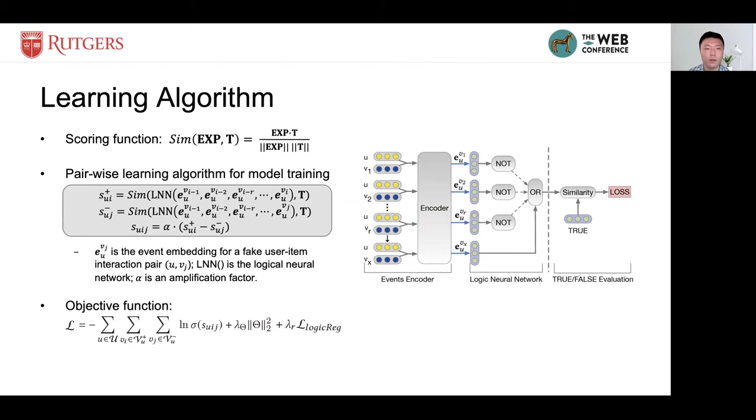First, we get a user U and his interactive items and feed them into encoding function to gather their event vectors. Then, if this is under an implicit feedback setting, the event vectors are sent to NOT module and then recurrently fed into OR module to get the final output.